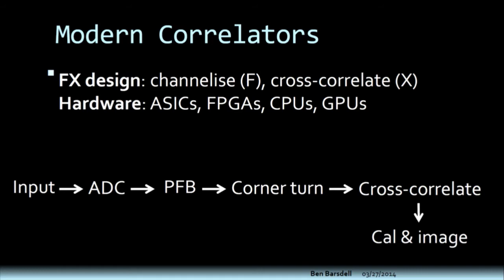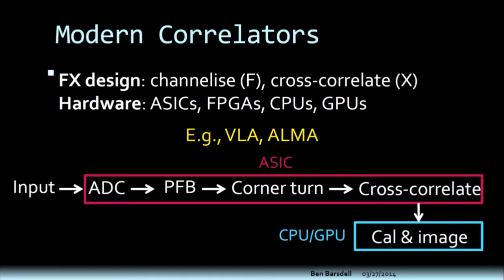Modern correlators basically work with an FX design. The F constitutes the channelization — we take the raw signals, digitize them, and then channelize them using a Fourier transform or a polyphase filter bank, which is essentially a modified Fourier transform. Then the second stage is the X, which is the cross-correlation, and that's where the n-squared term kicks in and tends to hurt. The pipeline takes raw input through an analog-to-digital converter, then through the channelizer into what we call the corner turn — a big network transpose swapping inputs for channels — and then into a cross-correlator. Finally, the output can be run through a calibration and imaging pipeline. These pipelines have historically been designed using ASICs, FPGAs, CPUs, and most recently GPUs.